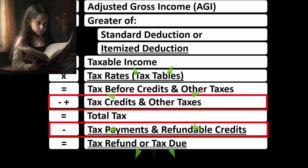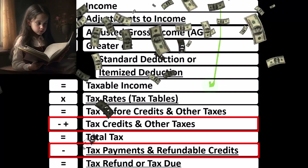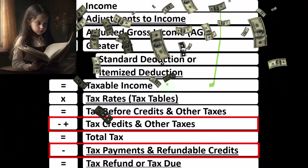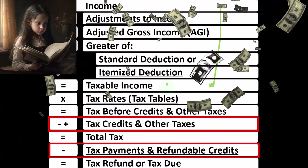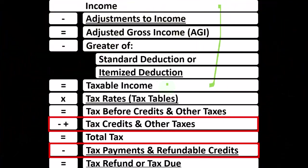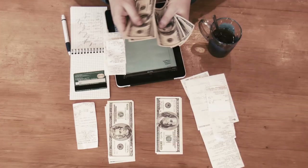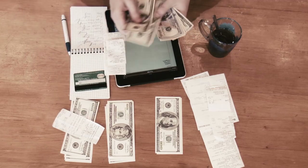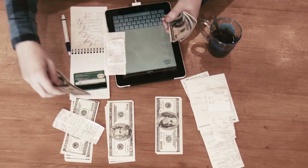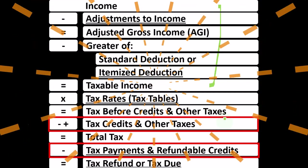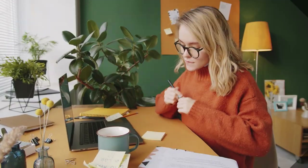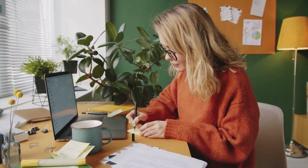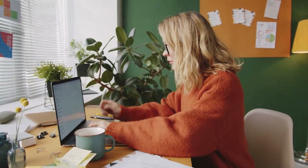Remember, the first half of the income tax formula is in essence an income statement, although a strange one. The bottom of it results in taxable income, similar to net income for an income statement. We use that to calculate the tax before credits or other taxes, not by multiplying by one rate, but by using the progressive tax system. Then we deal with credits, other taxes like self-employment tax, and payments made through withholdings or estimated tax payments, to get to the tax refund or tax due bottom line.